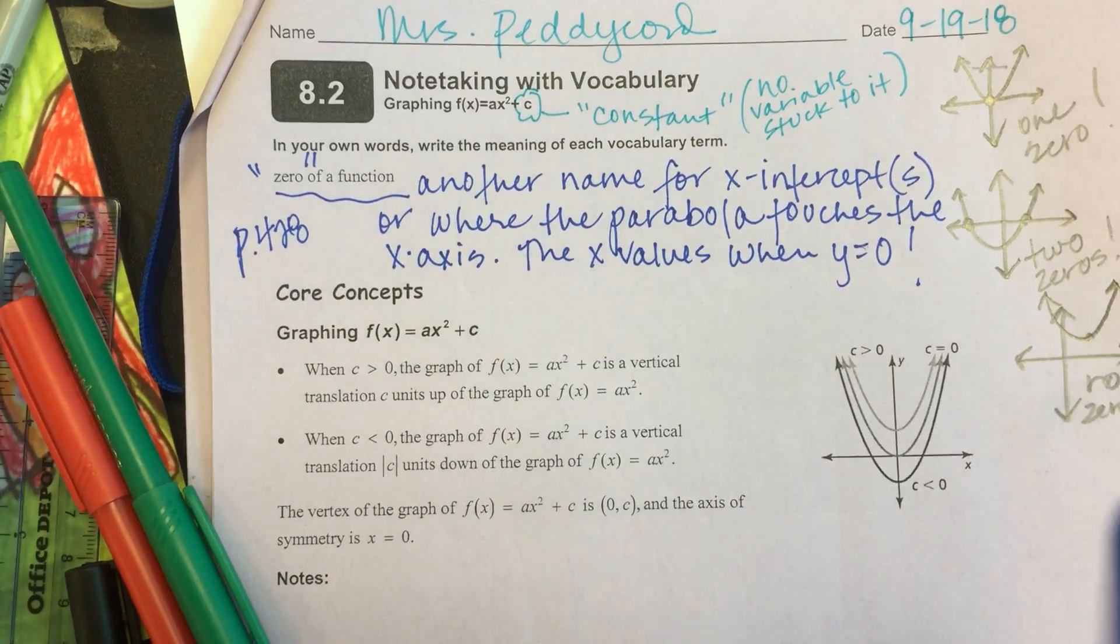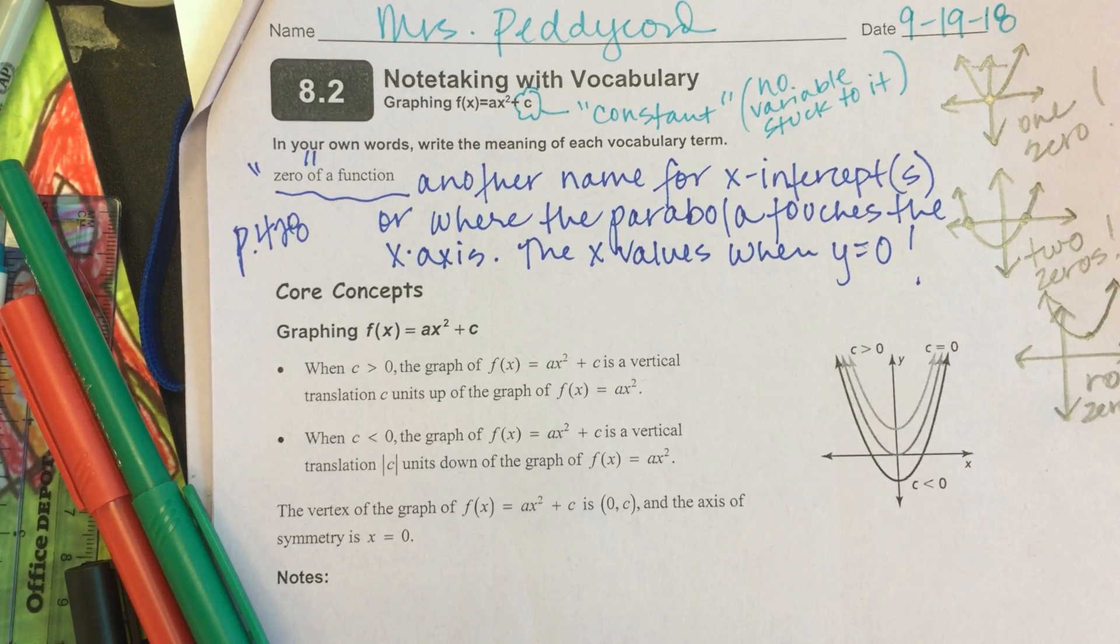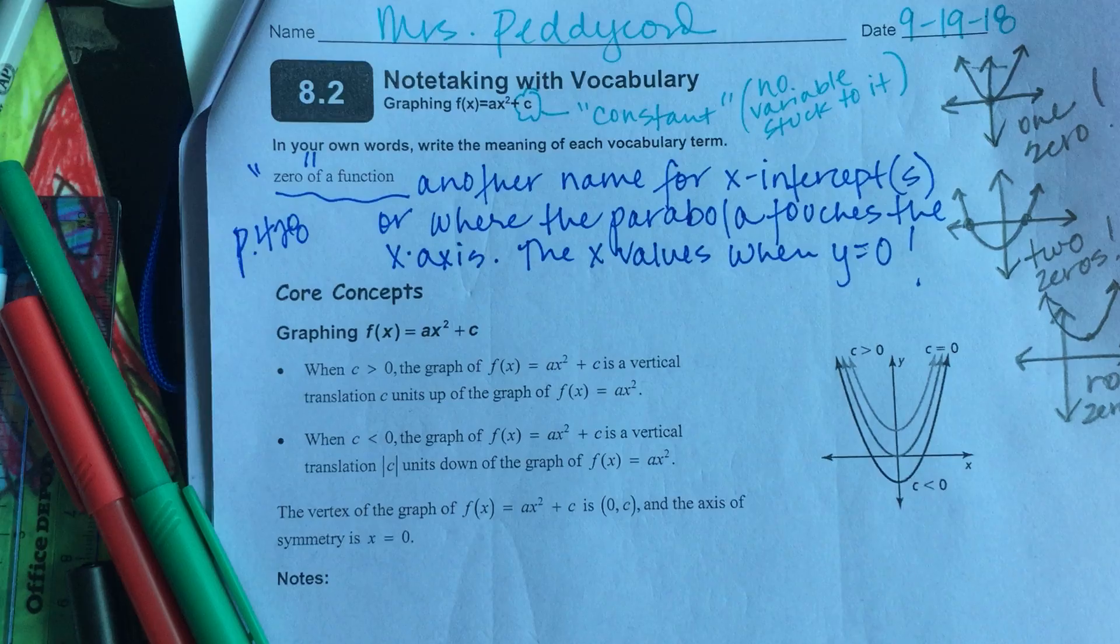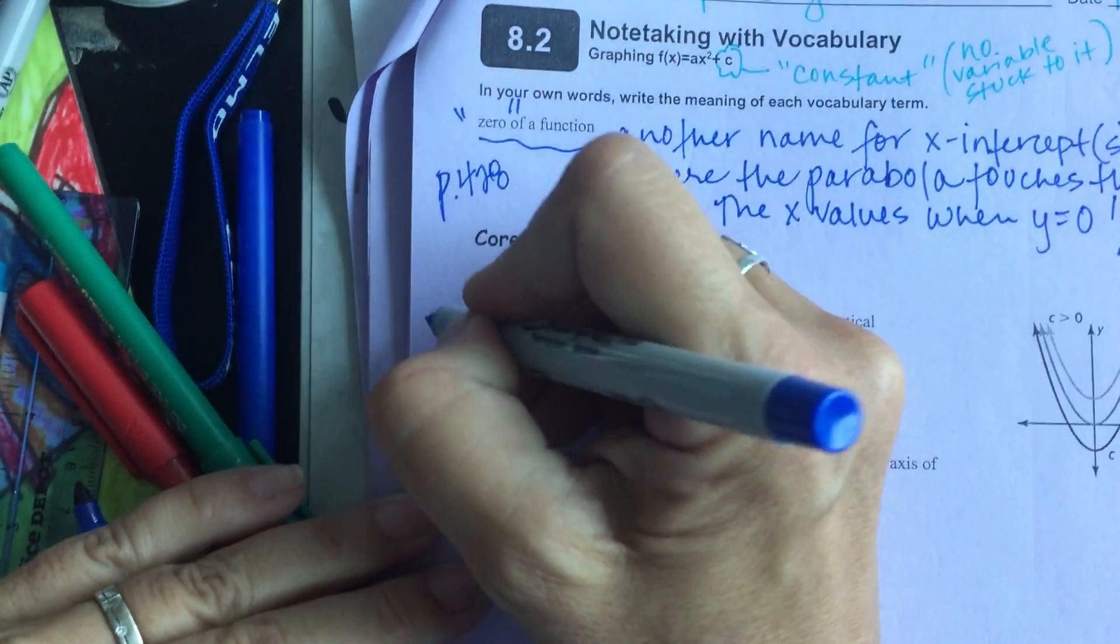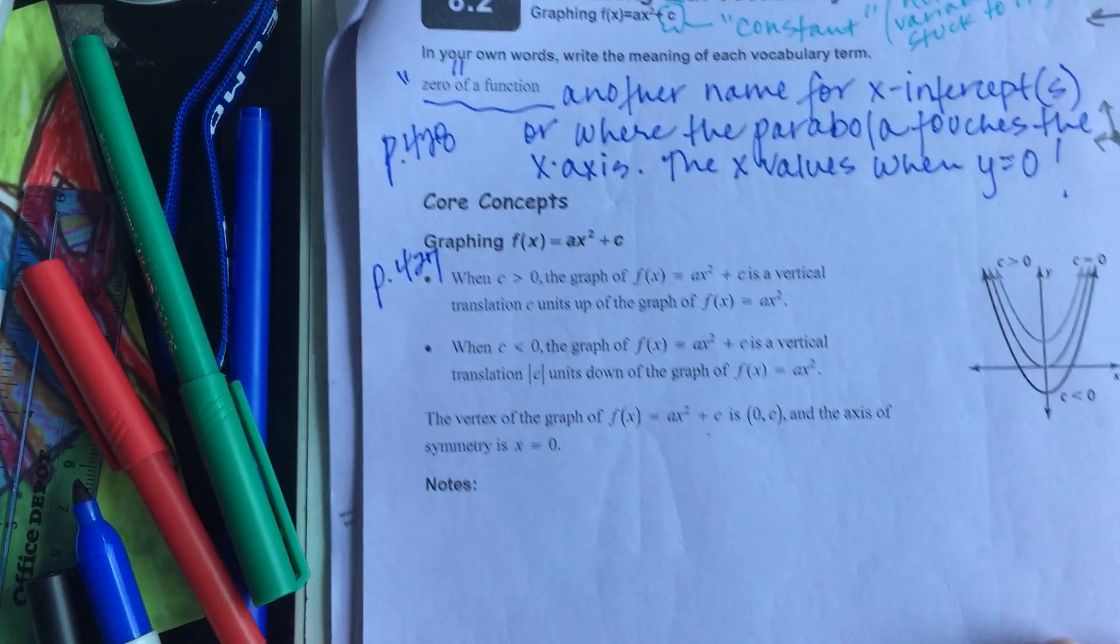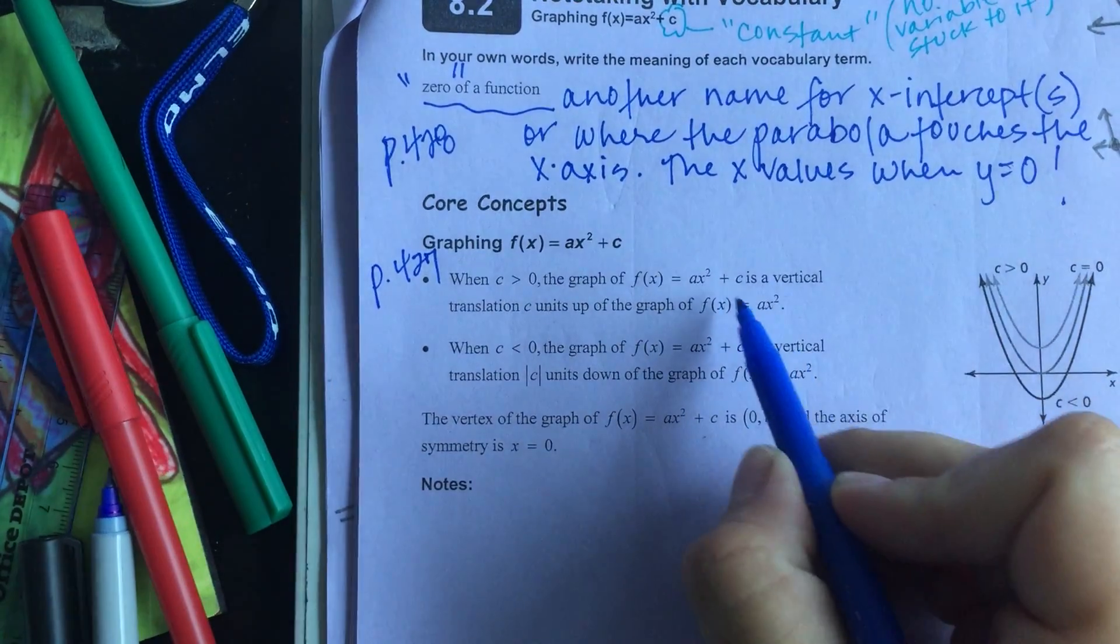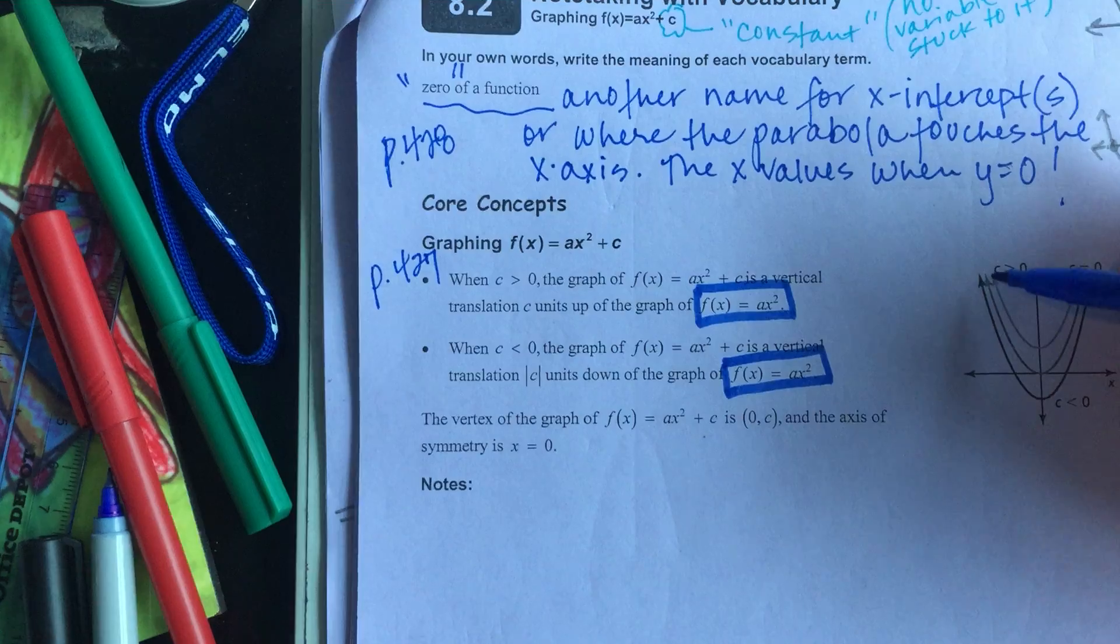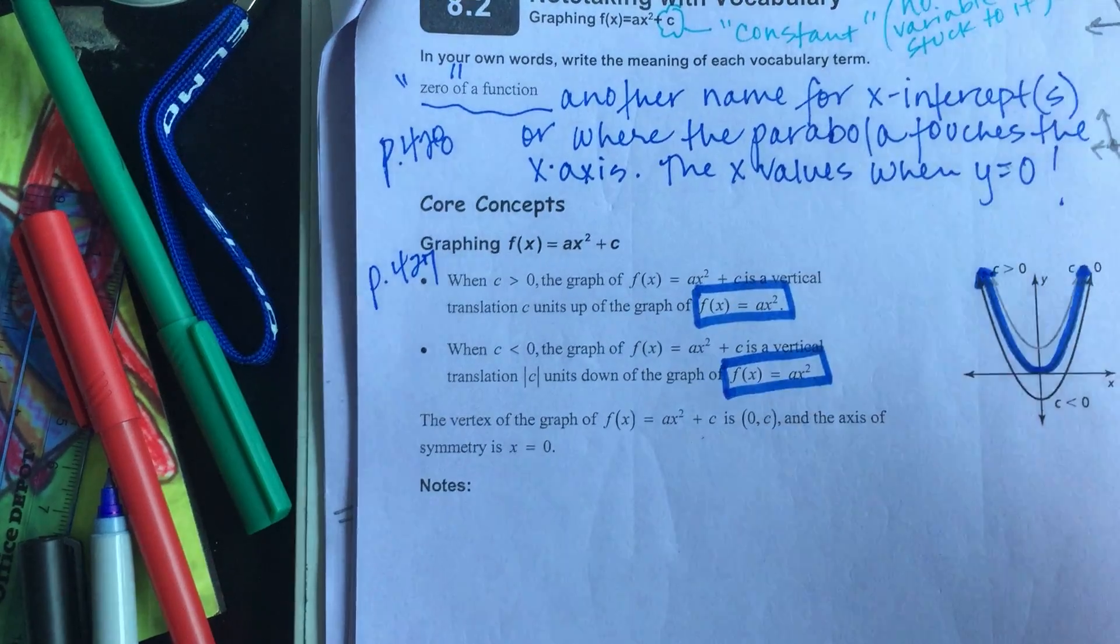First things first, we're going to identify where the parent is. This core concepts box shows up on page 427 in your book. When you put your books in your hand tomorrow, you'll be able to take a look. The first thing that I want us to do is go identify, find the parent function. I'm going to use blue. They talk about the parent twice here. It's the one that's in the middle, hitting the origin with its vertex. So I'm just going in and making that one blue.